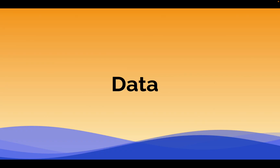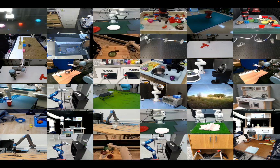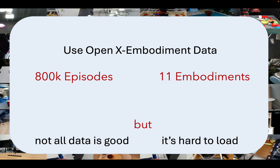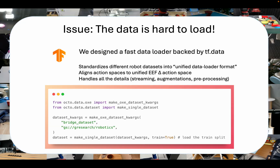Let's talk about the data used to train Octo. We used the OpenX Embodiment Dataset, which is a large collection of robotic data collected by academic labs around the world. We used a subset that had 800,000 episodes on 11 different robot embodiments, the largest training set for a robotic policy so far. Loading terabytes of data in a model training pipeline is very difficult infrastructurally, and we designed a lot of tooling to make it easy for new people to pre-train their own models on this kind of data.